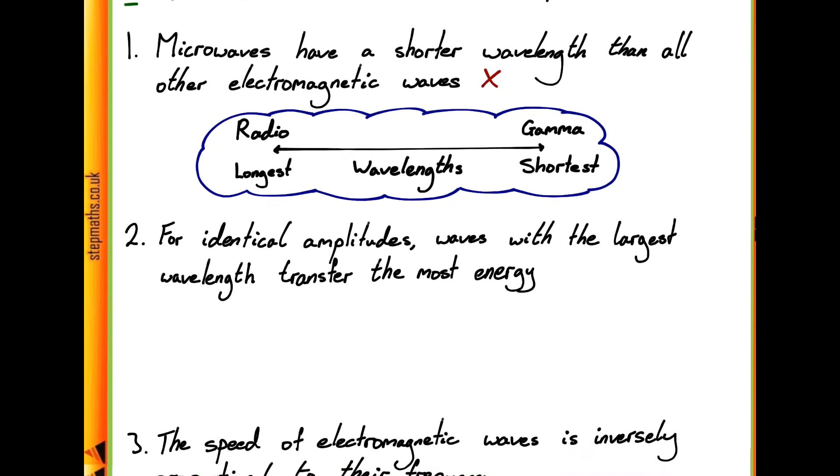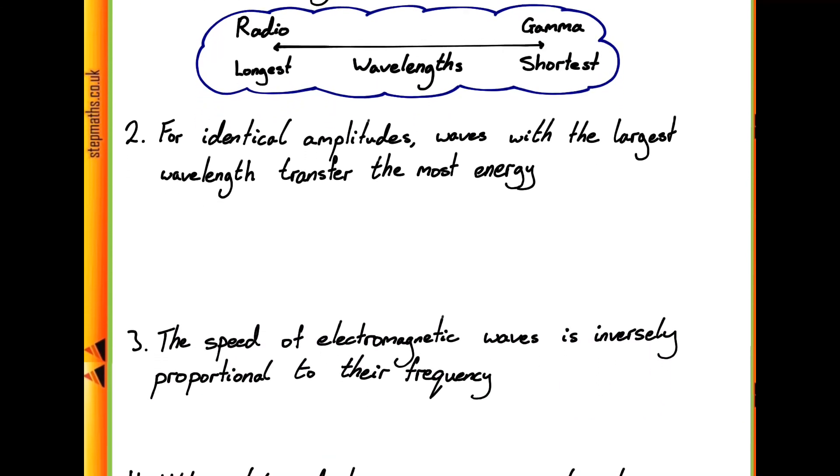Let's go ahead and look at the second statement next. So this statement says that for identical amplitudes, waves with the longest wavelength transfer the most energy. So to go about answering this one, let's think about how wavelengths are related to energy. Well, we've just spoken about wavelengths actually in the previous statement. So we know that they go from radio all the way up to gamma.